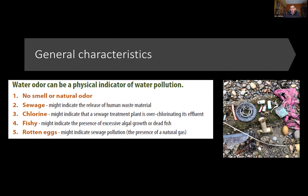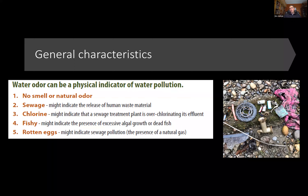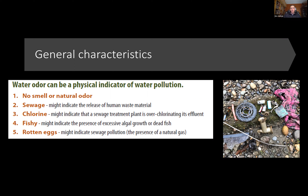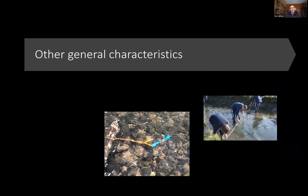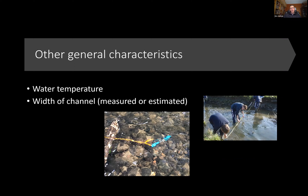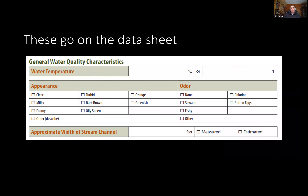Also note whether you smell anything — hopefully you don't, but if you do, record it. Other general characteristics to always monitor include water temperature, the width of the channel (measured or estimated), and what kind of land use is in the area. There's a section on the data sheet for these variables where you can make check marks and notes.